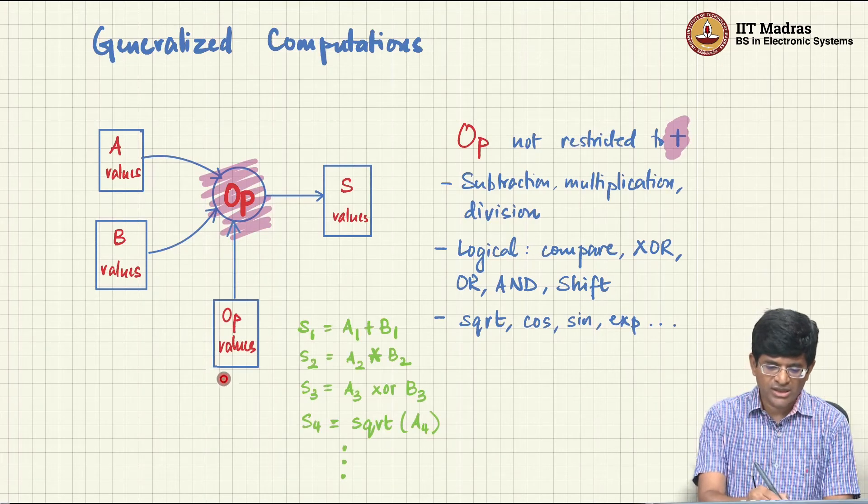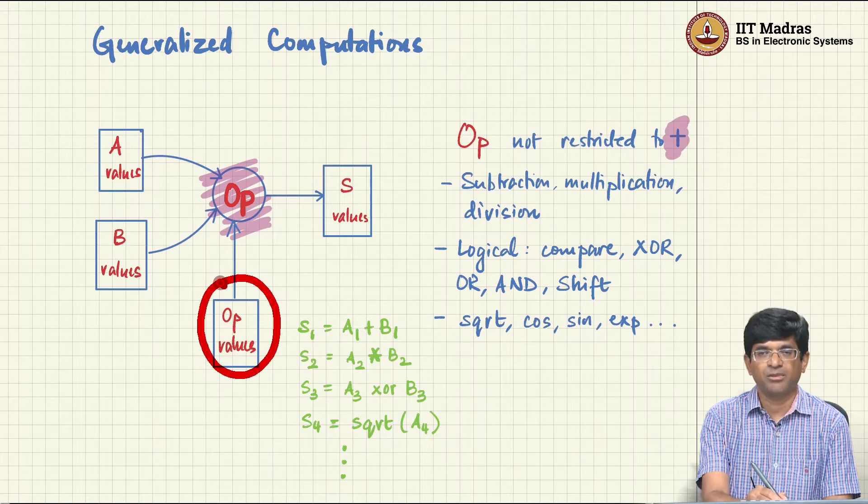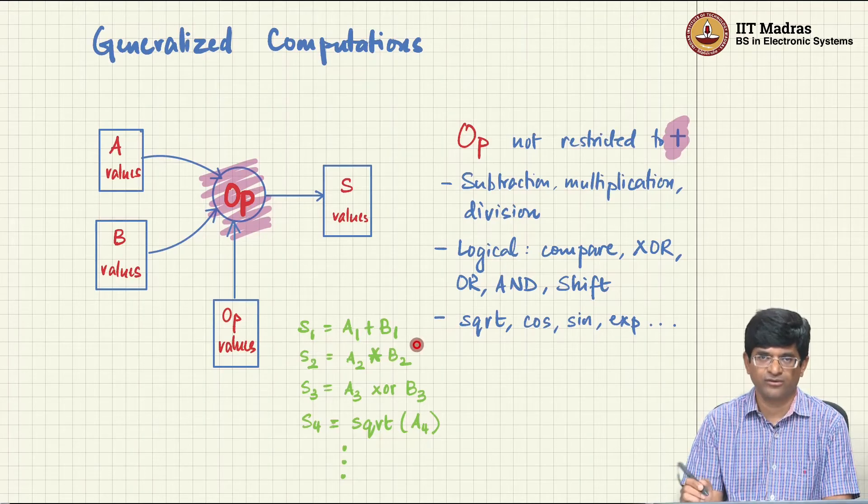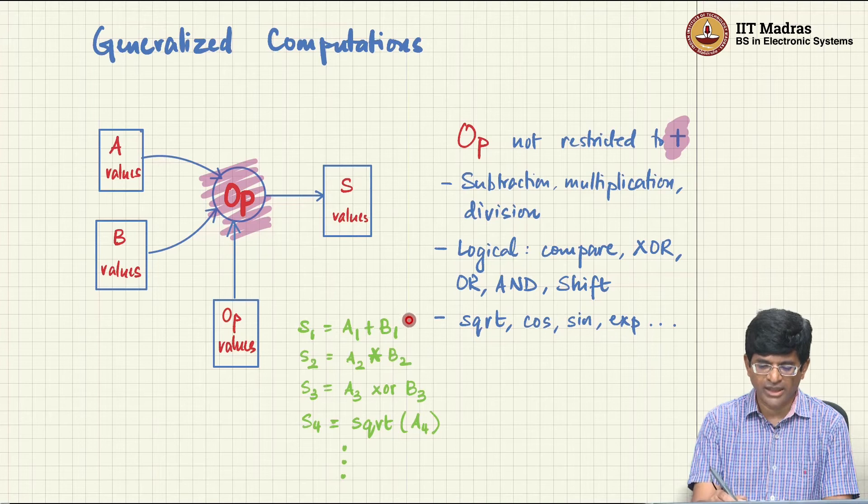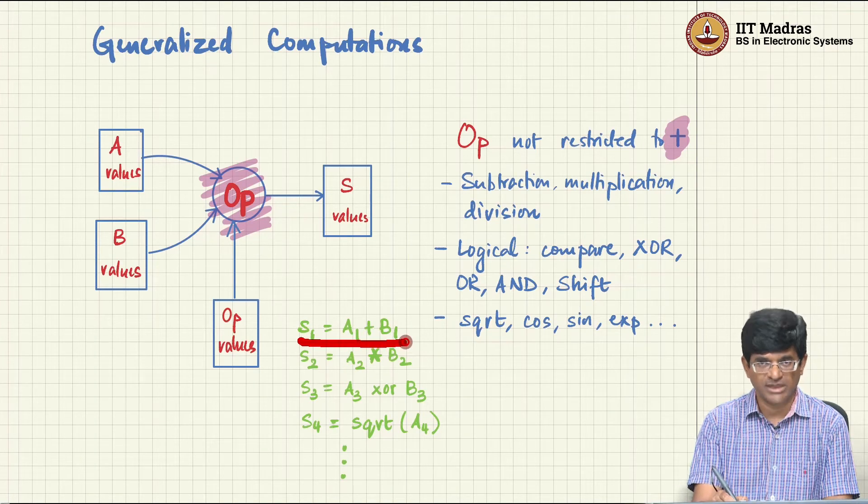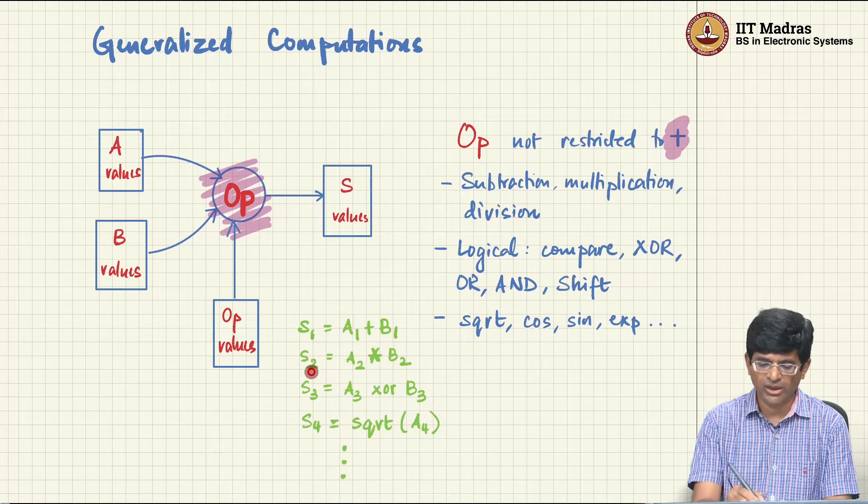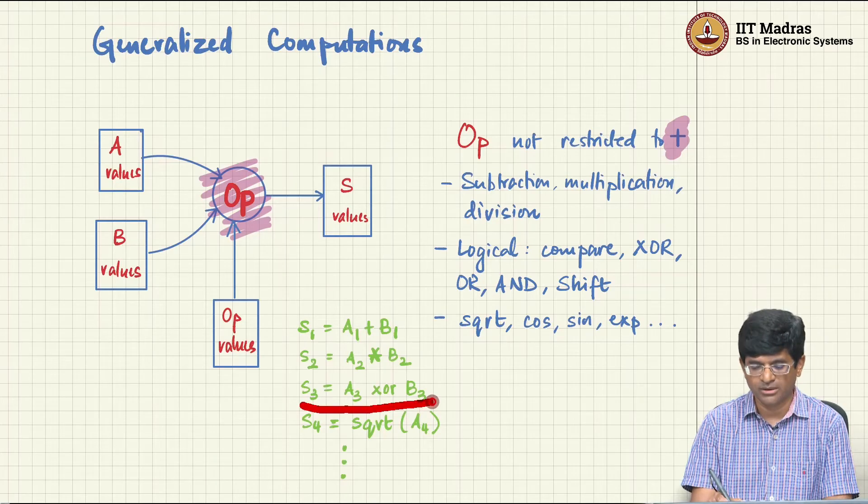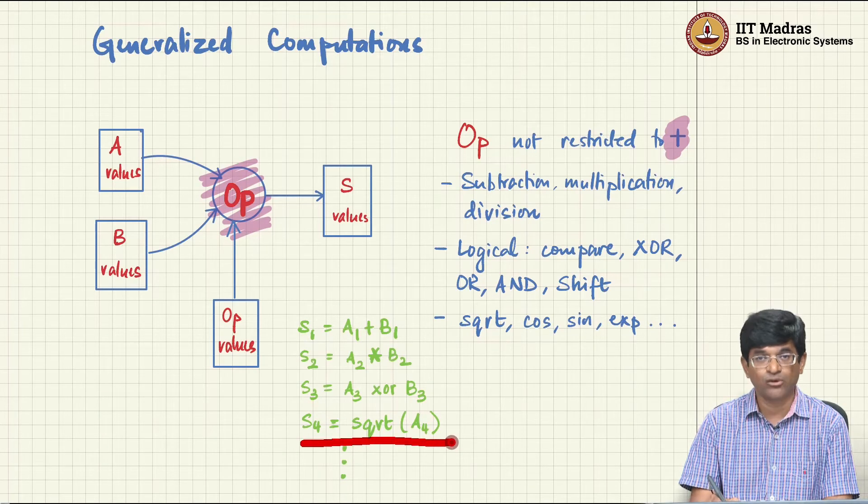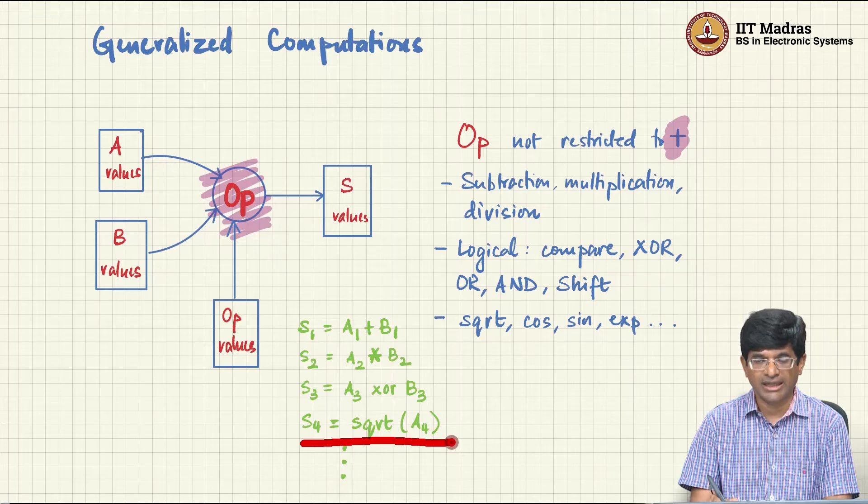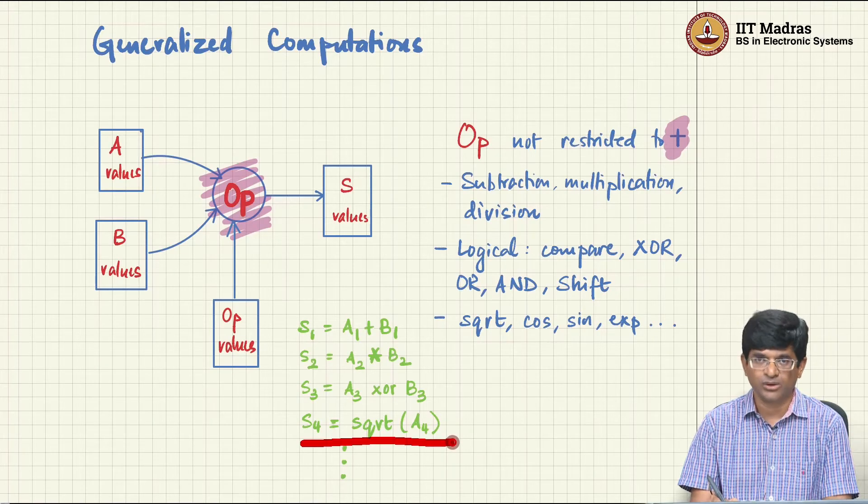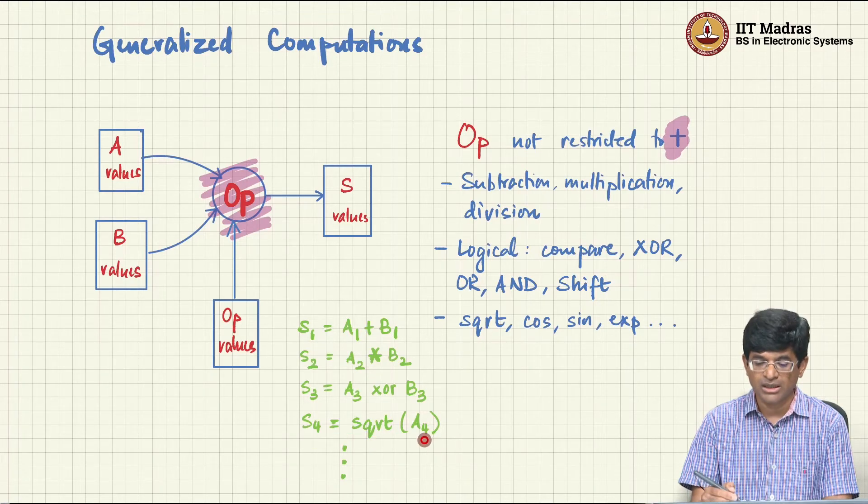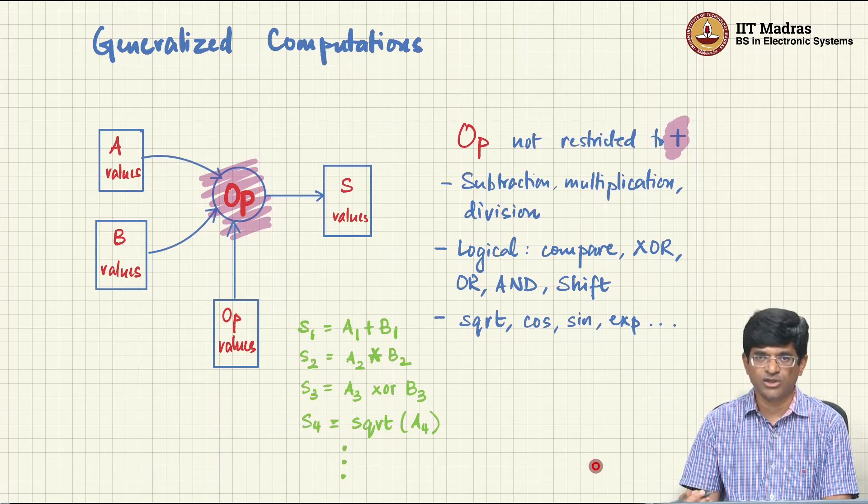So the op values in other words may also end up coming from a memory block. What that means is now suddenly if I have a sequence of operations that I want to perform - I have A1 and B1 and I want to add them together that is possible. But A2 and B2 maybe I want to multiply them together. A3 and B3 I want to XOR them together and A4 I want to find a square root and at that point whatever was there in B4 maybe I just do not care what it was. So I could basically just ignore it, I only want to use A4. So in this way already you can start to see how this starts to become useful.